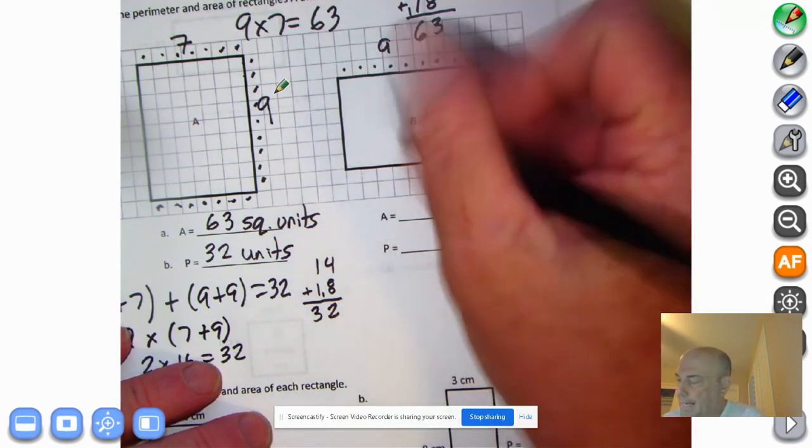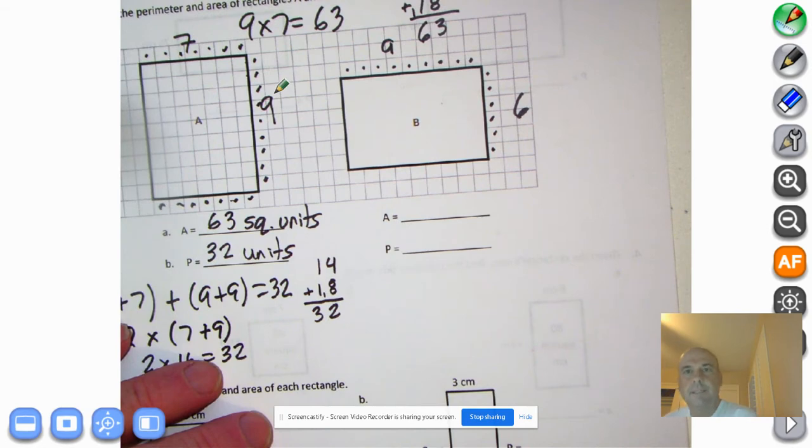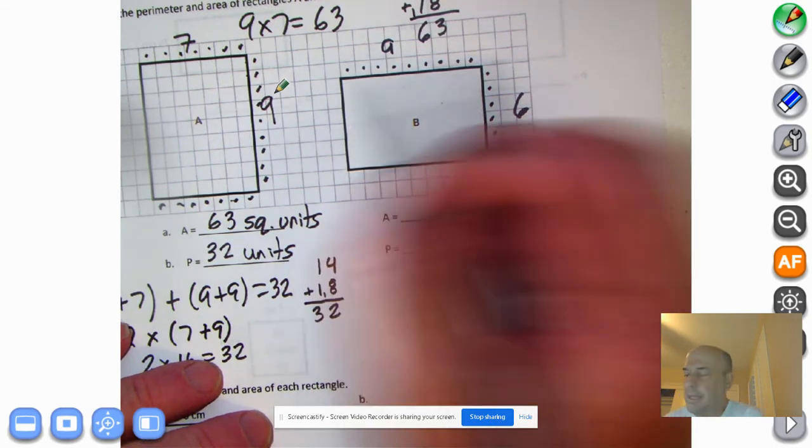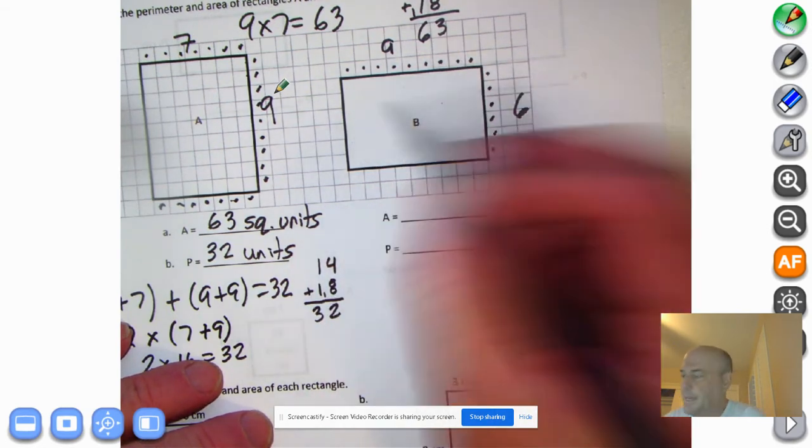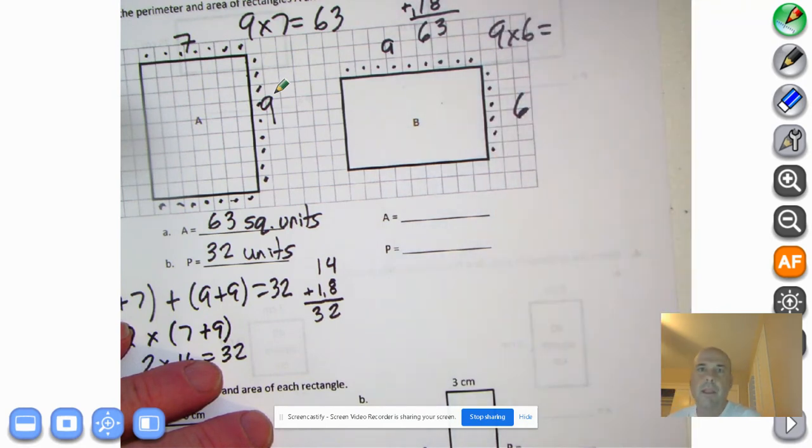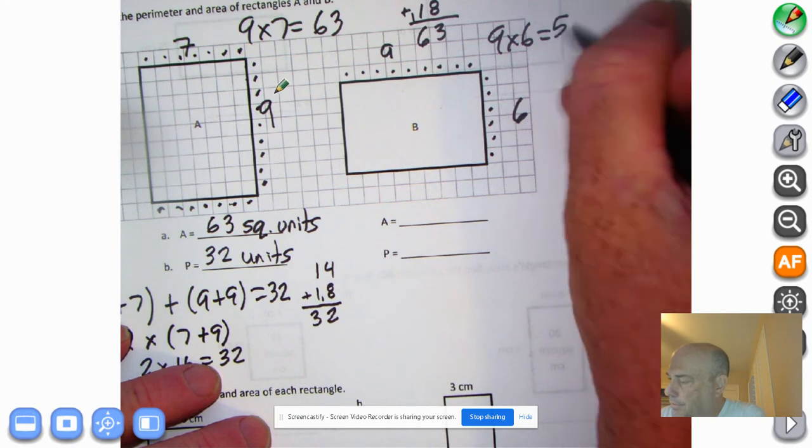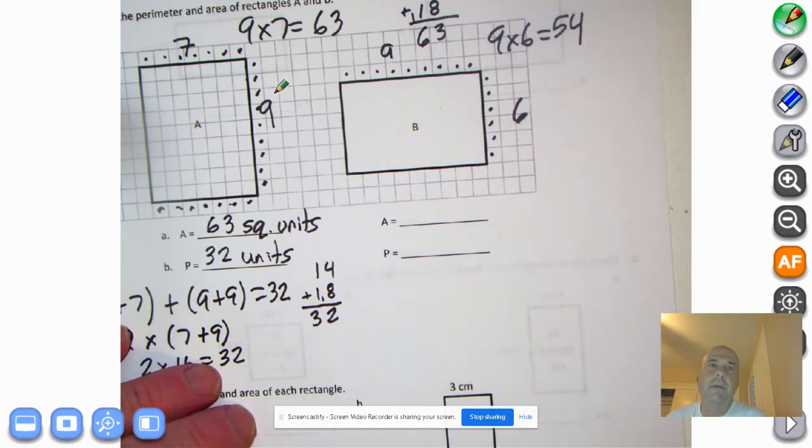Area is what's inside here, inside rectangle B. And remember, the easiest and quickest way to get to area is we multiply the length and the width. So nine times six. What's nine times six? Hope we got our nines down. They're going to be kind of tricky. It's 54.